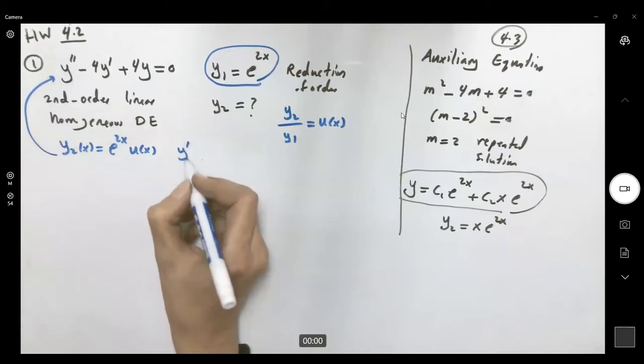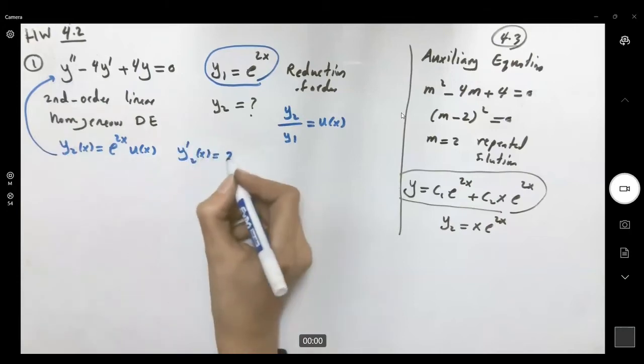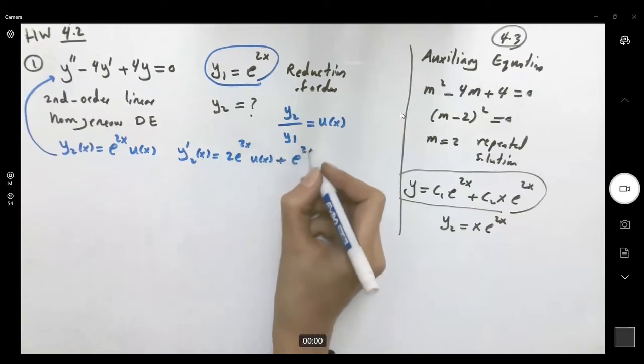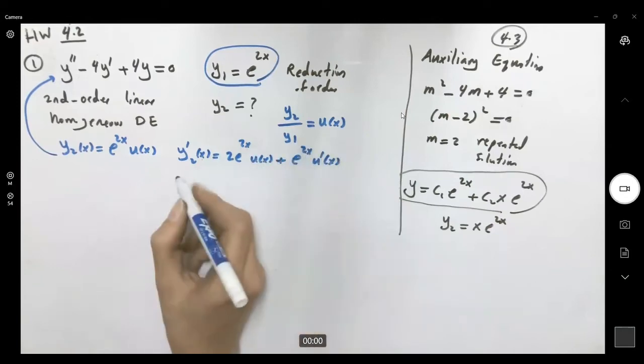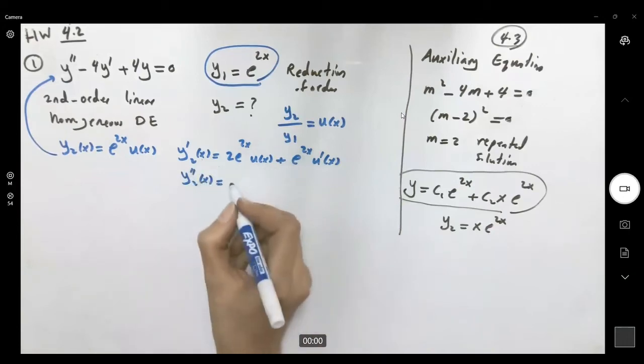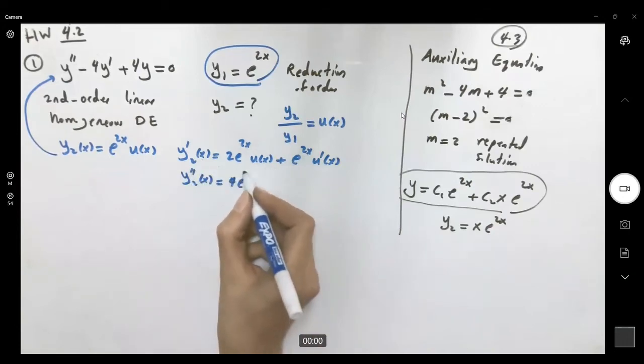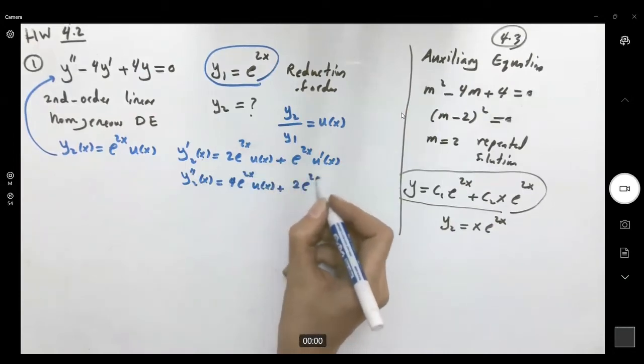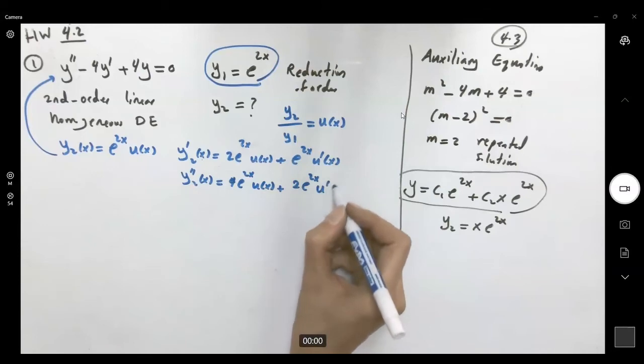So the first derivative is equal to 2 e to 2x u of x plus e to 2x u prime of x. And the second derivative becomes, here you have 4 e to 2x ux plus 2 e to 2x u prime of x.